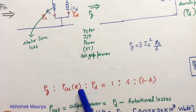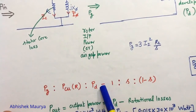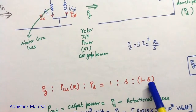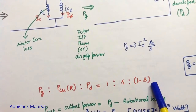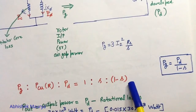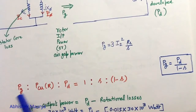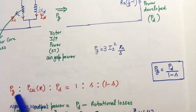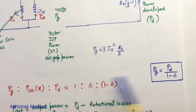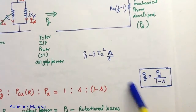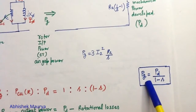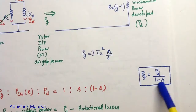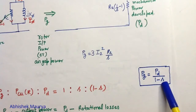We can find a relation between Pg, Pcu, and Pd. The relationship is: Pg to Pcu to Pd is 1 to s to (1 − s). You can write an expression for Pg and Pd, and the relationship between Pg and Pd can be written as Pg equals Pd upon (1 − s).